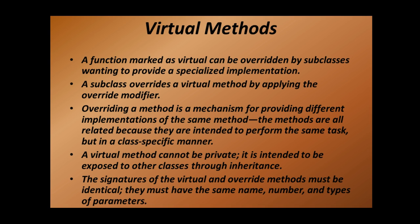A function marked as virtual can be overridden by subclasses wanting to provide a specialized implementation. A subclass overrides a virtual method by applying the override modifier. This says that if we have a base class and a derived class, and we have a function in the base class marked as virtual, we can overwrite that method through our derived class — meaning we can provide our own implementation of that virtual method. Let's see this in an example.